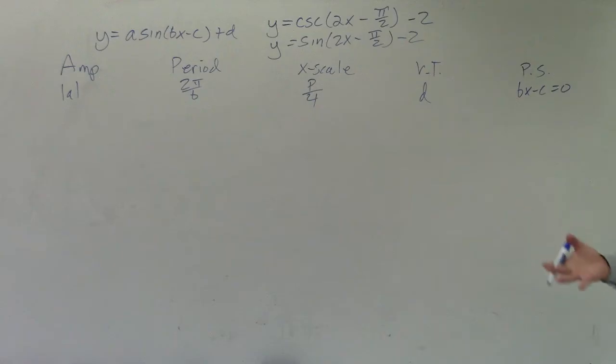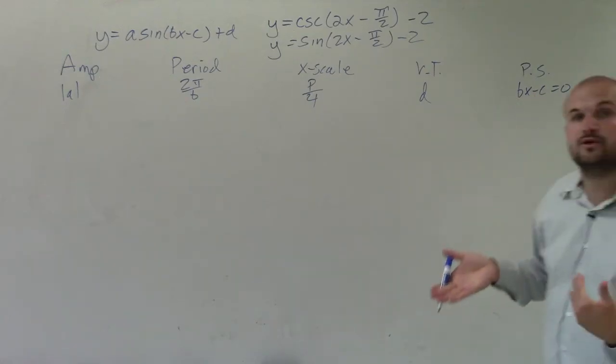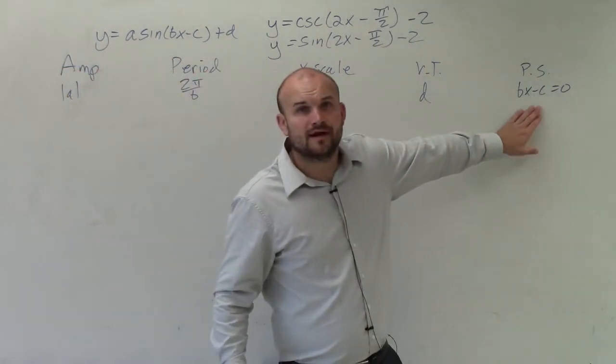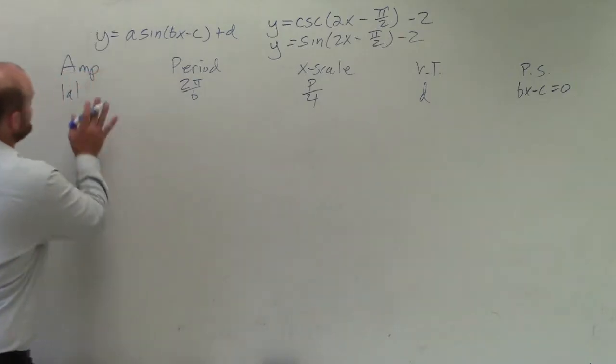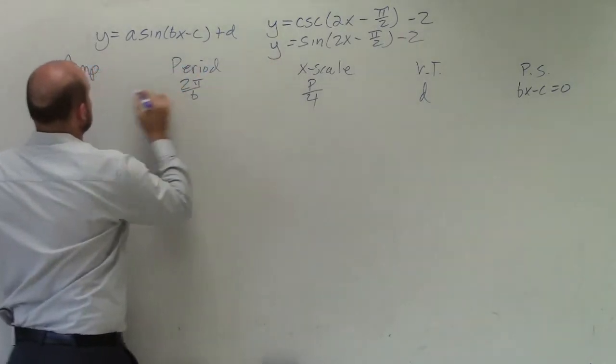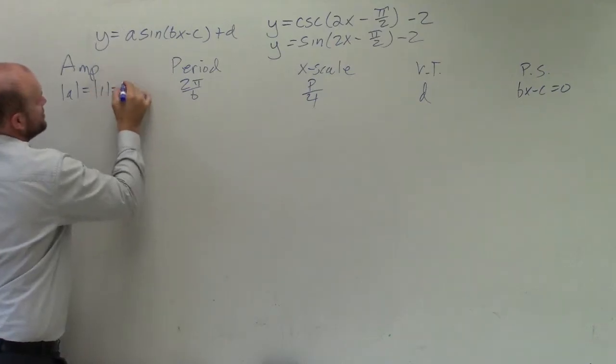Let's go ahead and figure out each one of these. For amplitude, you can see there's no number that's in front of the sine, so that's going to be absolute value of 1, which is just equal to 1.